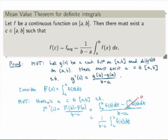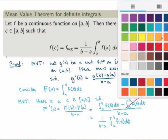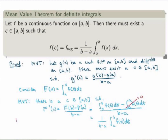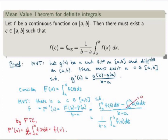Now I evaluate the left-hand side: capital F prime of c. By the fundamental theorem of calculus, the derivative of the integral from a to x of f(t) dt is just little f(x). Therefore, capital F prime of c is simply little f(c). It follows that there must exist a c such that f(c) equals 1 over (b minus a) times the integral from a to b of f(t) dt — which is exactly the statement of the mean value theorem for definite integrals.